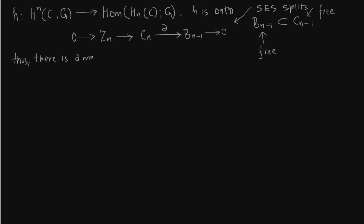Therefore there is a map P from CN to ZN. This map P, when restricted to ZN — and ZN is already part of CN, it is the part of CN on which applying delta gives zero — this P restricted to ZN is just the identity map. We are going to use this to extend the map.